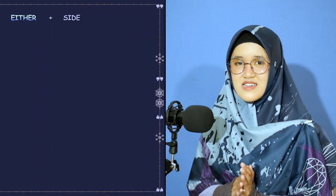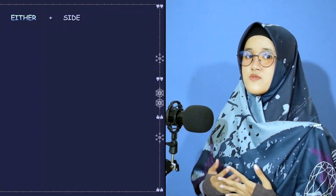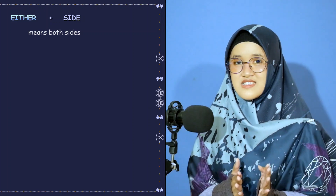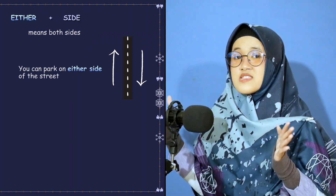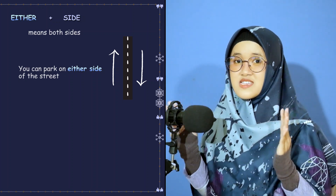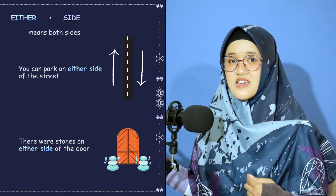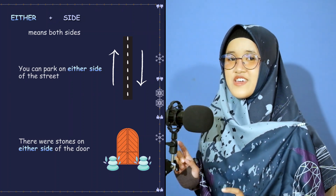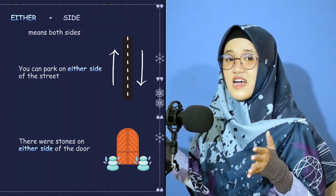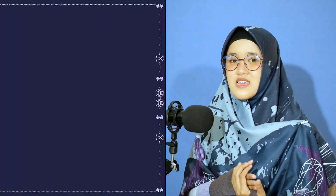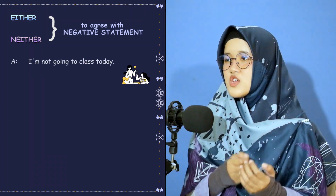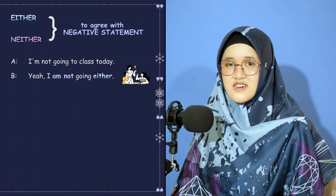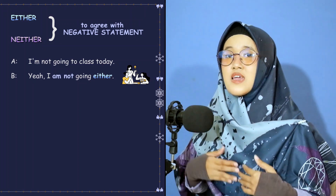When we use 'either' with the word 'side,' it means both sides. 'You can park on either side of the street' — this means both sides of the street. 'There were stones on either side of the door.' Please remember that we don't use 'both' in negative sentences. Instead we use 'either' or 'neither' to agree with a negative statement.